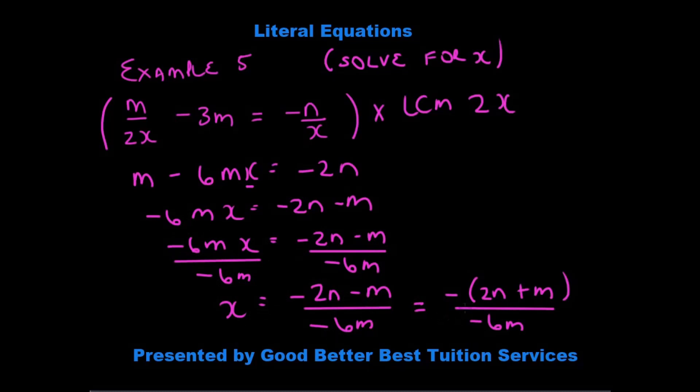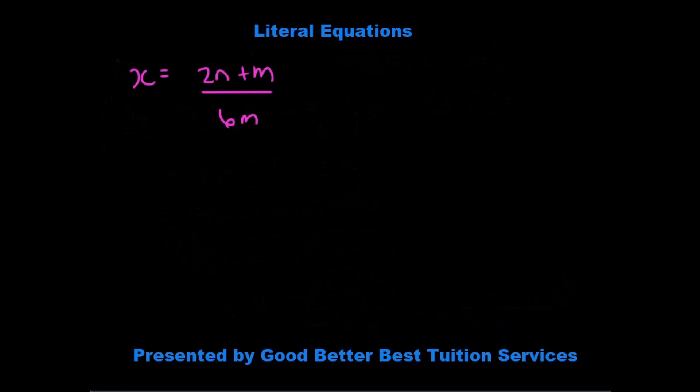We can still take out the negative as a common factor, leaving us with 2n plus m over negative 6m. And that gives us our final answer of x is equal to 2n plus m over 6m.